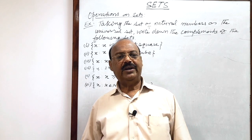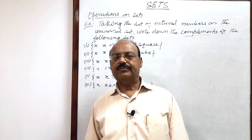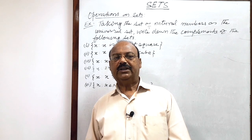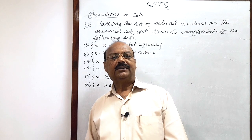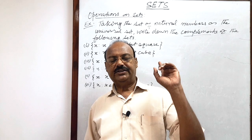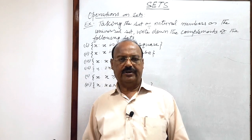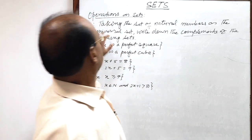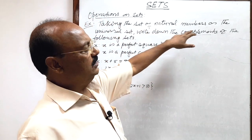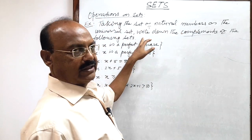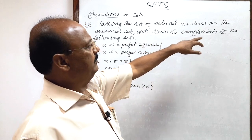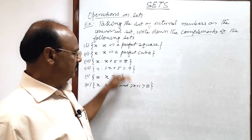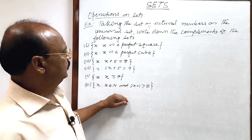Welcome students. Let us see a very simple and interesting question from the NCRT book. This question has been taken from the subtopic 'Complement of a Set' from the chapter Set Theory. The question asks us to take the set of natural numbers as the universal set and write down the complements of the following sets. The questions have been given in six different parts and we will do them one by one.